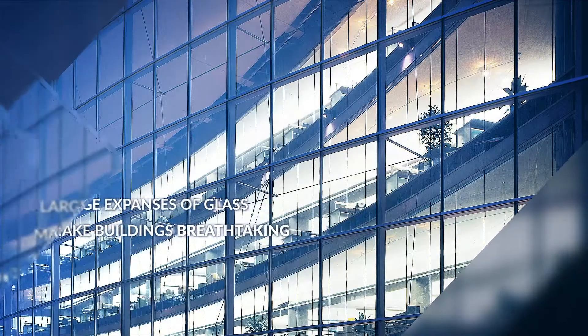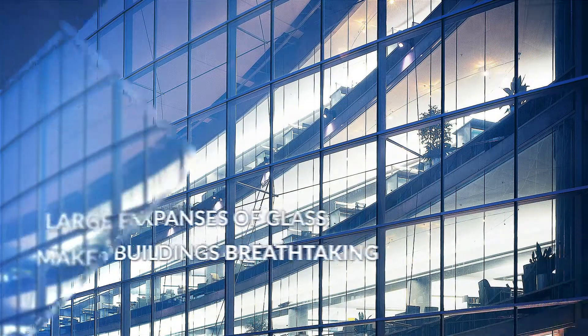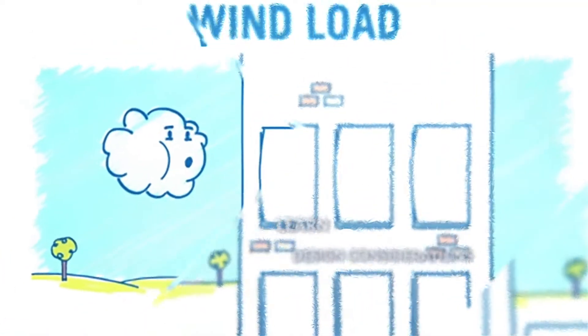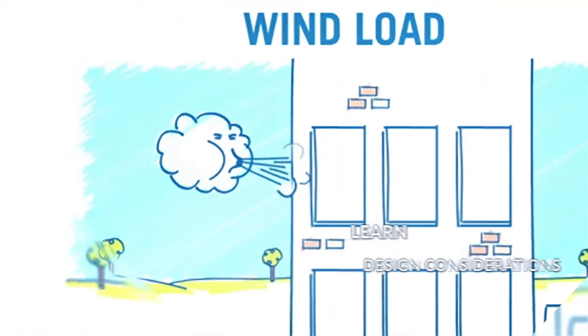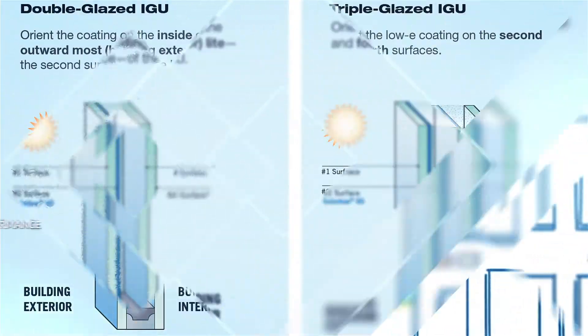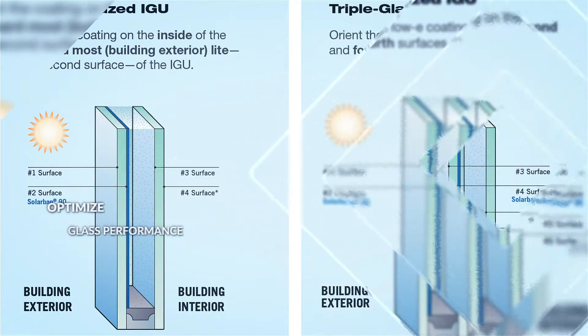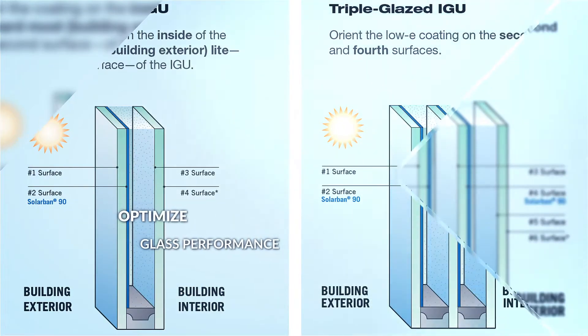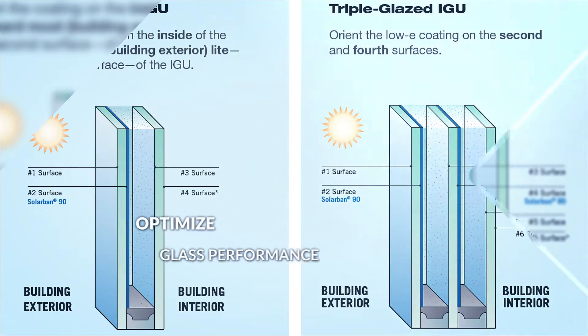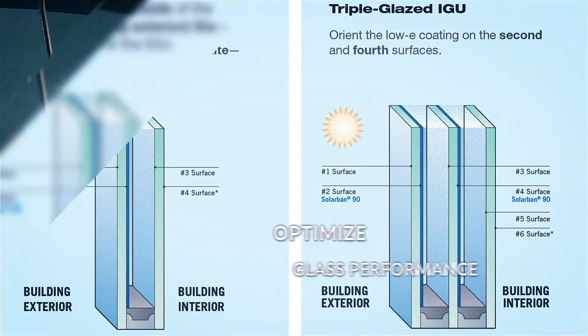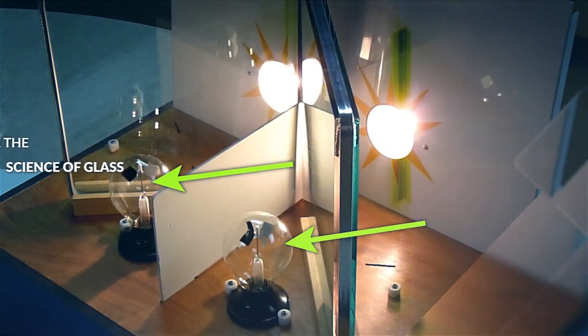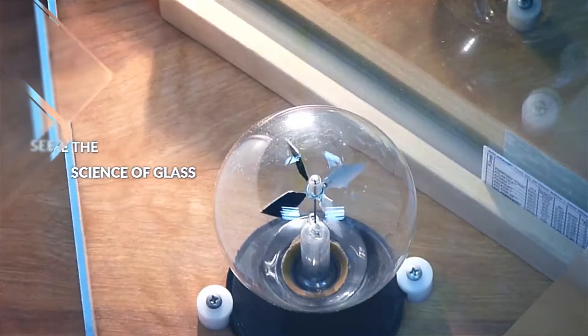Some of the world's most dramatic buildings showcase large panels of insulated glass. But what design considerations should you keep in mind before specifying them? What's the optimal placement for Low-E coatings in an insulating glass unit, and how does Low-E glass actually improve building performance?